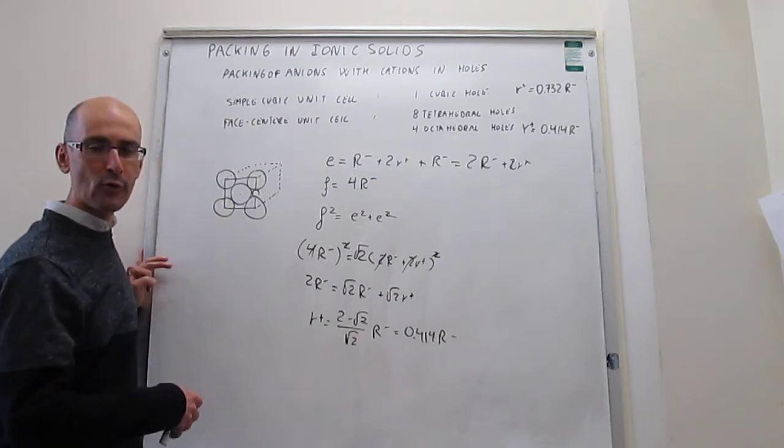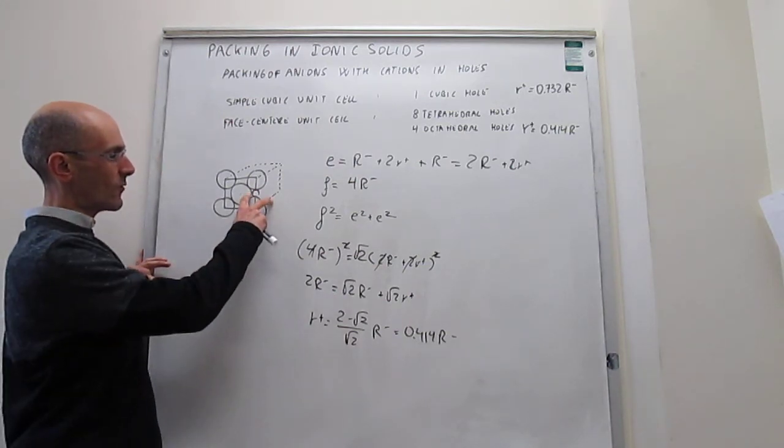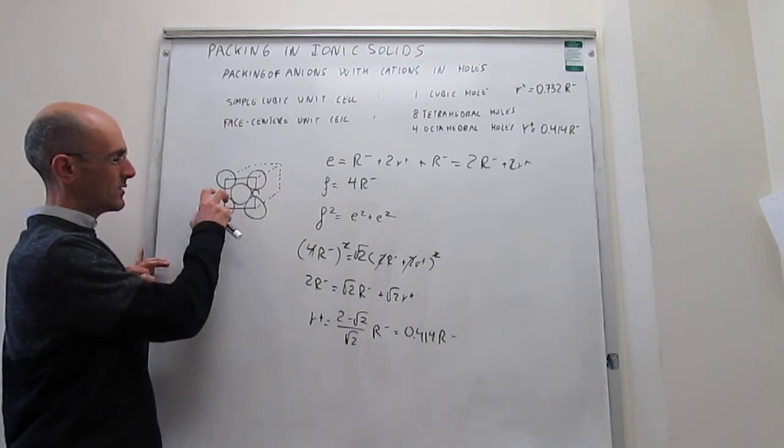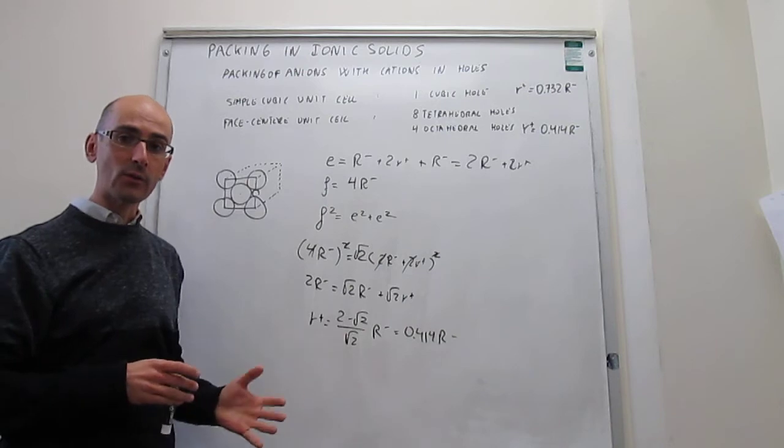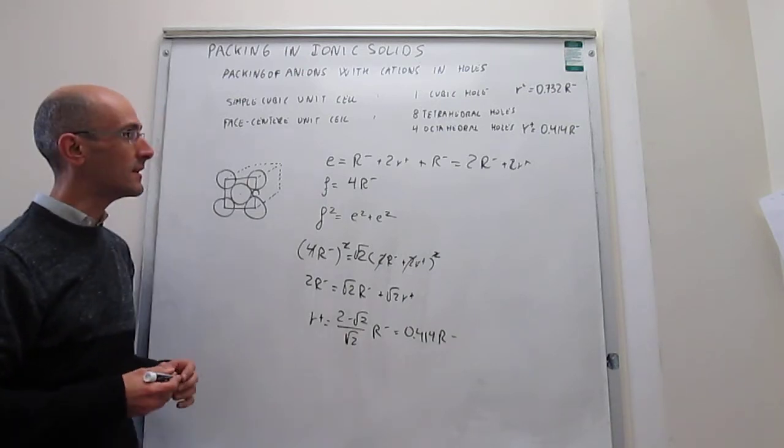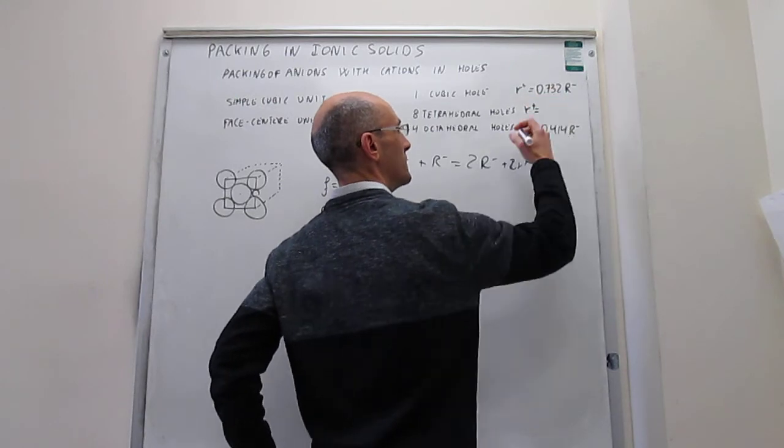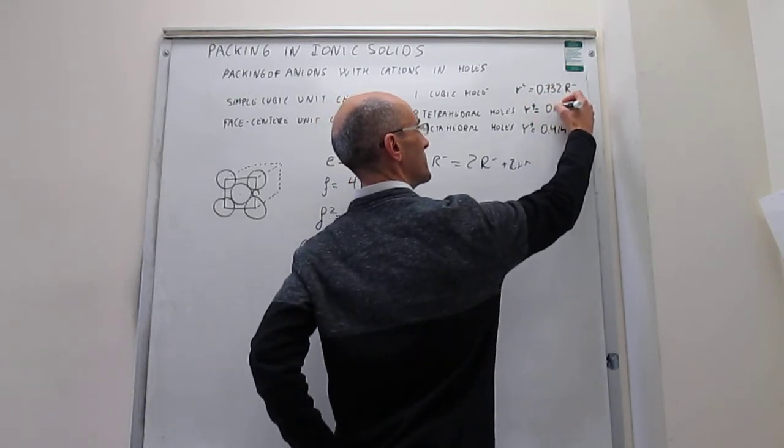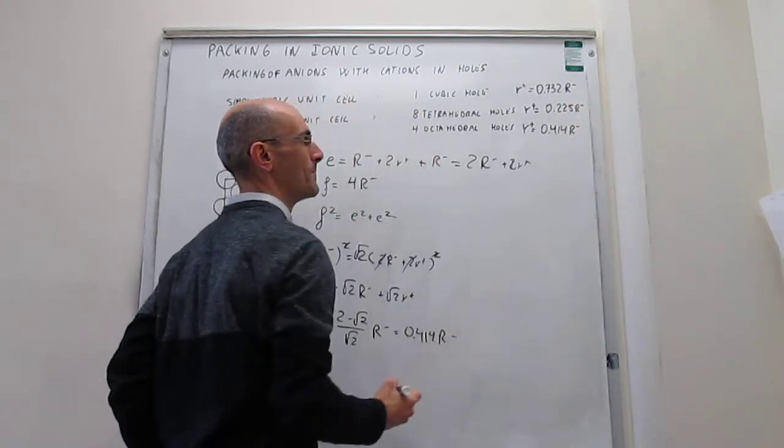So there are some other types of holes in the face-centered cubic unit cell, which are the tetrahedral holes. Those would be the ones that are right behind each one of the spheres in the corners, and we are not going to carry out the calculation for the limiting radius. Instead, we are simply going to write here what the limiting radius would be, which is going to be 0.225R-.